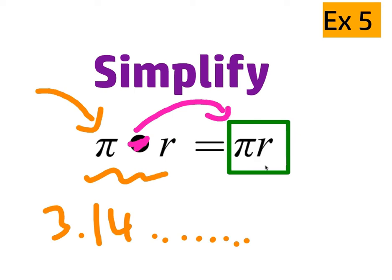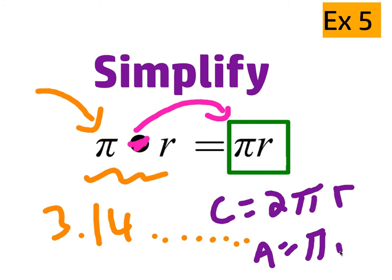And pi R means what? Anybody know? It means pi times R, and you'll see that a lot. You'll see that, for example, in the circumference equation. Circumference equals 2 pi R. That means 2 times pi times the radius, or area equals pi R squared. And that just means multiplying.